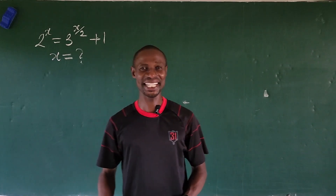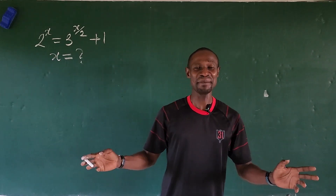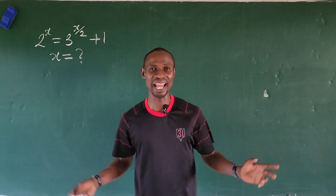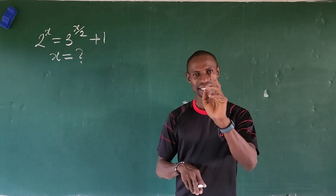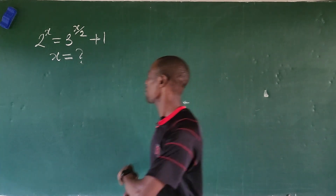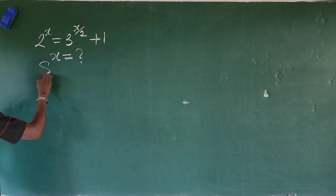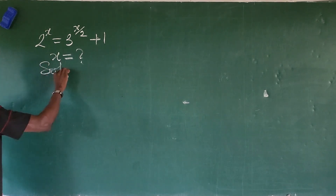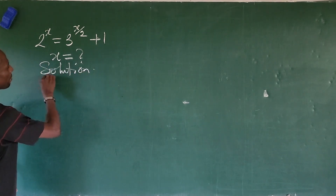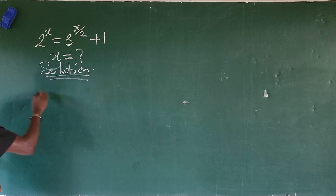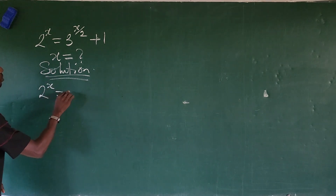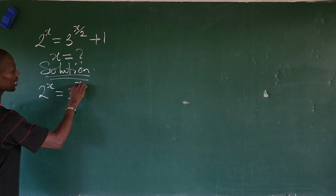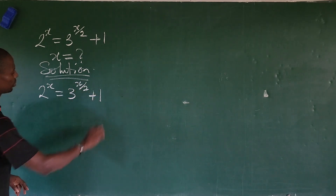Hello everyone, welcome to Online Math TV. My name is T. Jakes. As you all know, we have a very nice exponential equation, so let's take our solution without much waste of time. Let's write down the equation: 2 to the power of x is equal to 3 to the power of x over 2 plus 1.